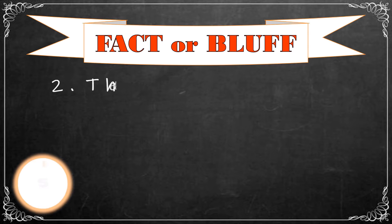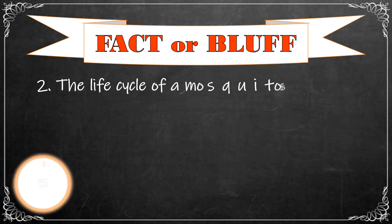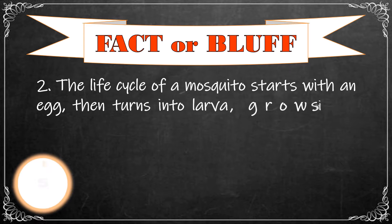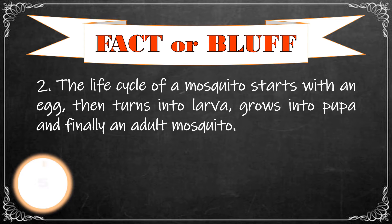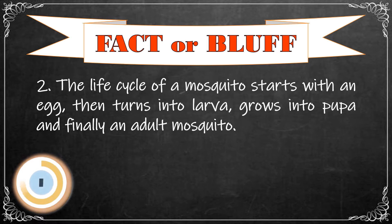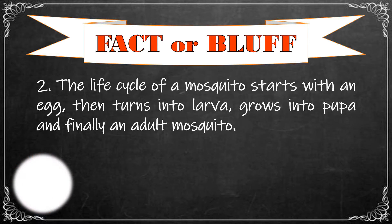Number 2: The life cycle of a mosquito starts with an egg, then turns into larva, grows into pupa, and finally an adult mosquito. The correct answer is fact!